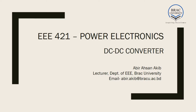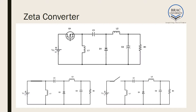In this lecture we will be learning about the basics of the last DC-DC converter of this course, which is the Zeta Converter. Here is the circuit of the Zeta Converter — there is a switch, two inductors and a capacitor, a load bank, and the diode pointing upwards.